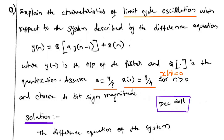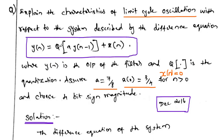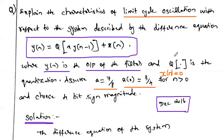The question is: explain the characteristics of limit cycle oscillation with respect to the system described by the difference equation y(n) = Q[a·y(n−1) + x(n)], where Q denotes the quantization process. The difference equation is simply y(n) = a·y(n−1) + x(n). The constant a is multiplied with the delayed output, and quantization is performed on this product. Due to this quantization error, we study the characteristics of limit cycle oscillation. Here y(n) is the output, x(n) is the input, and Q is the quantization process.